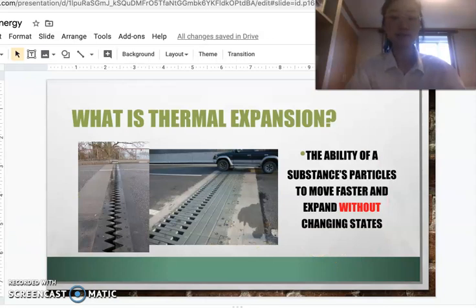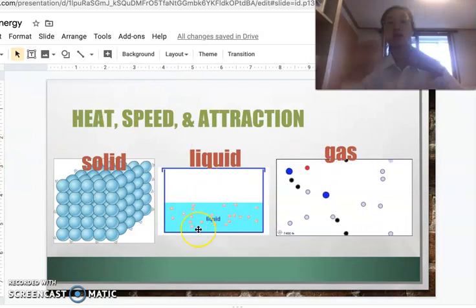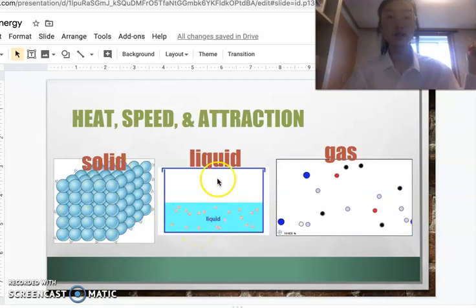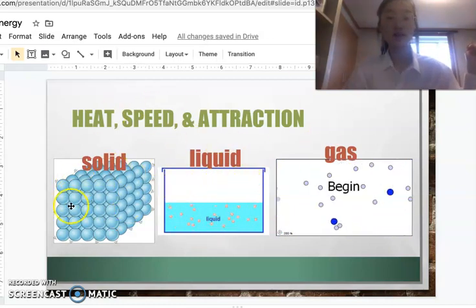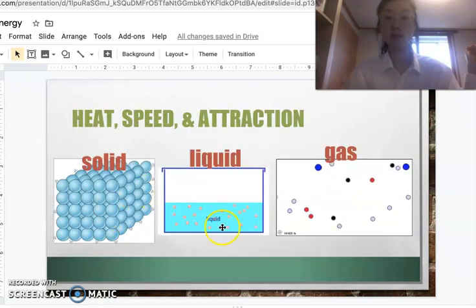Thermal expansion is basically something's ability of a substance particles to move faster and expand without changing into a different state. So we know that heat and thermal energy will cause the substance to change into a different state. For example, this ice cream. It changed from a solid to a liquid because of heat.